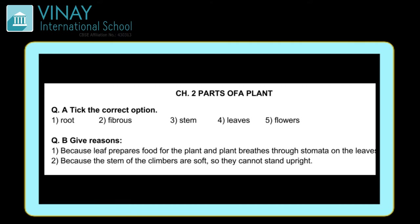The leaf is an important part of the shoot because the leaf prepares food for the plant and the plant breathes through stomata on the leaves. Leaf plant ke liye food bhi banata hai aur plant breathing bhi leaf ke through karta hai. Second: climbers cannot stand upright because the stem of the climbers is soft, so they cannot stand upright.